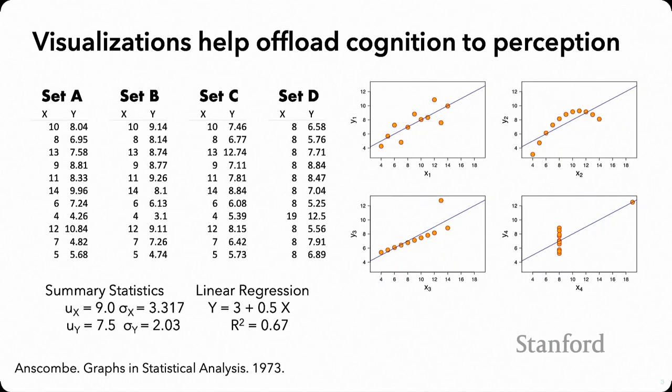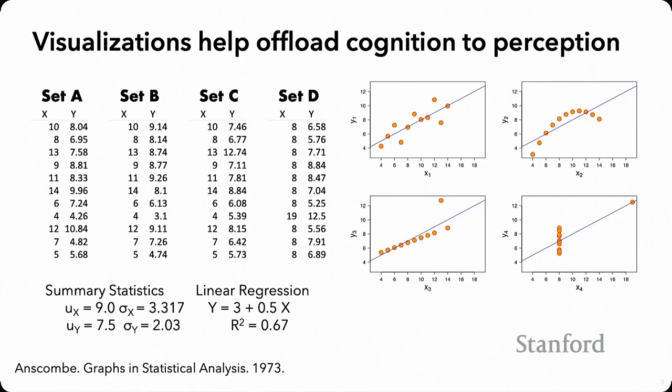In the last few decades, research on interactive visualization or information visualization has broadened from addressing only analysis to consider communication and decision making from data as well. But when it comes to how we view the function of visualizations and visualization systems that we're building, even within research, pattern finding is still kind of our common emphasis.